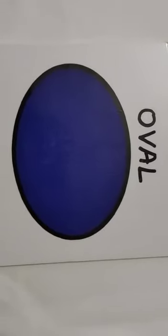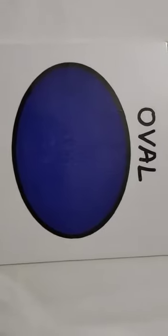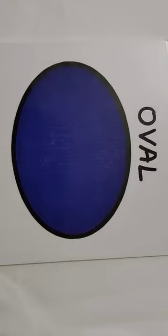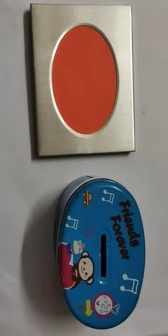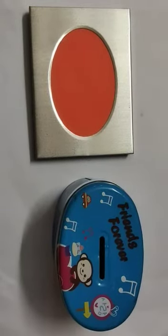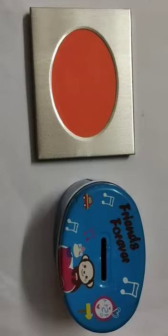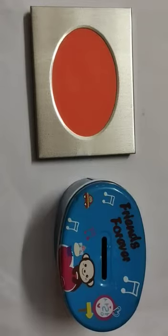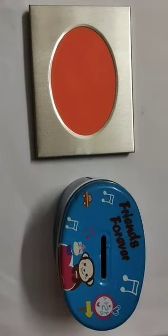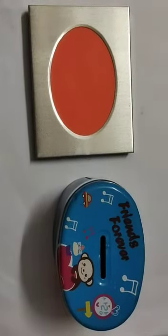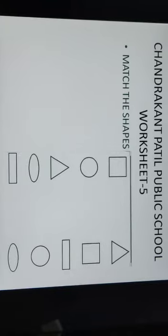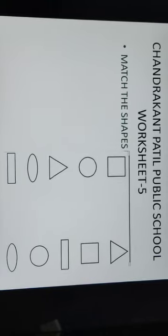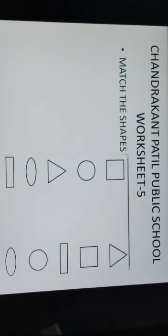Next shape is oval. Here are some examples for oval shape: an oval shaped photo frame and an oval shaped box.